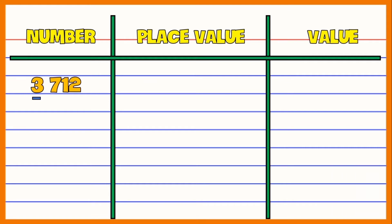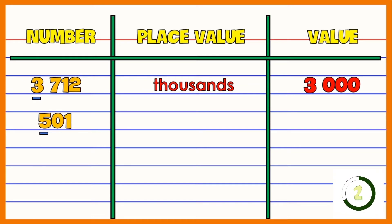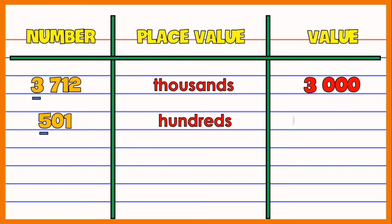Time is up! The place value of the digit 3 is thousands. How about its value? It's 3,000 since the digit 3 is in the thousands place. For our next number, 501 — identify the place value and the value of the digit 5. Go! Time is up! 500, since the digit 5 is in the hundreds place.